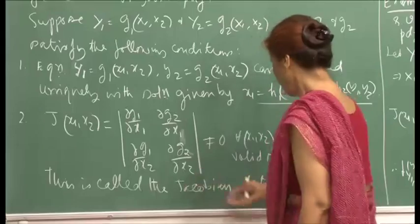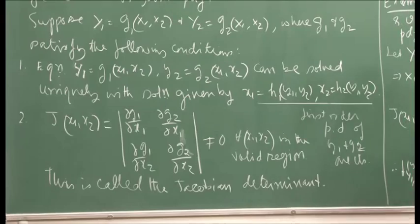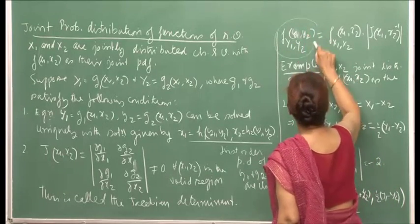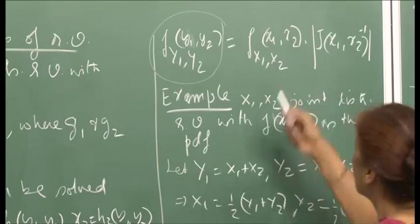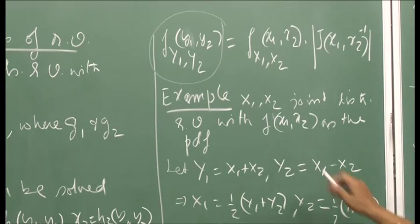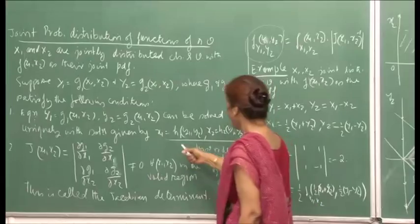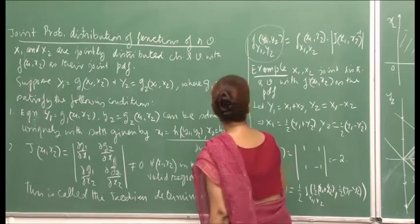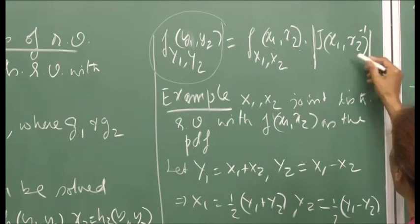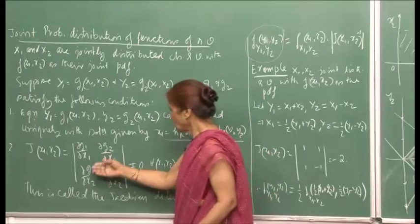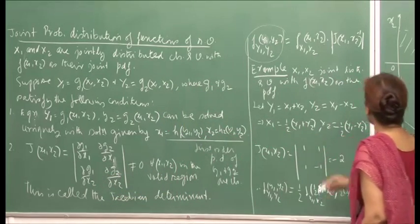We call this quantity the Jacobian determinant. The transformation formula for the PDF of Y₁ and Y₂ in terms of the PDF of X₁ and X₂ is: f_{Y₁Y₂}(y₁,y₂) = f_{X₁X₂}(h₁(y₁,y₂), h₂(y₁,y₂)) times the absolute value of the inverse of the Jacobian. You substitute x₁ and x₂ in terms of y₁ and y₂, compute the determinant, take its inverse, and take the absolute value.